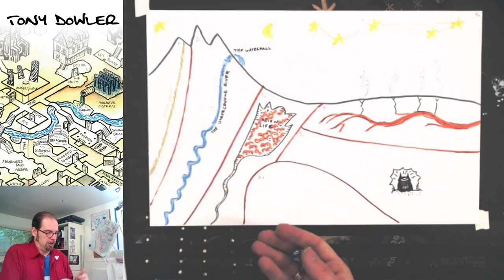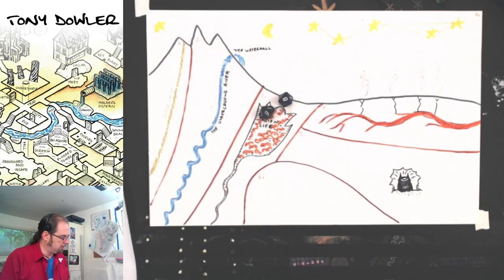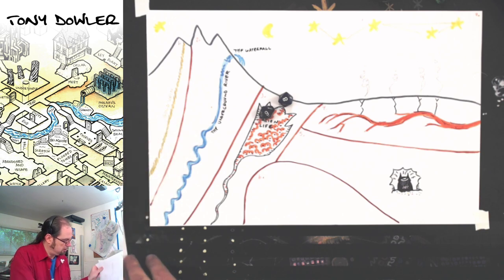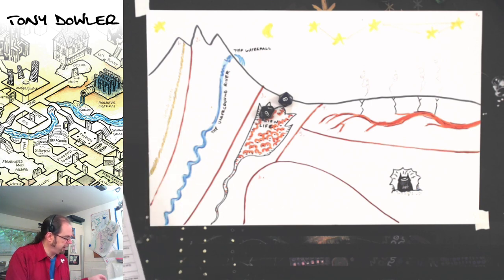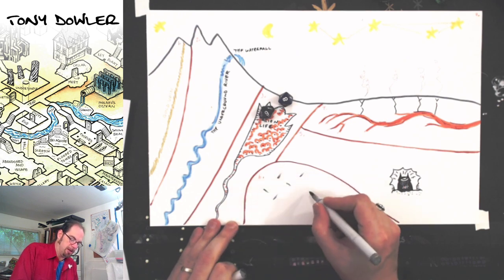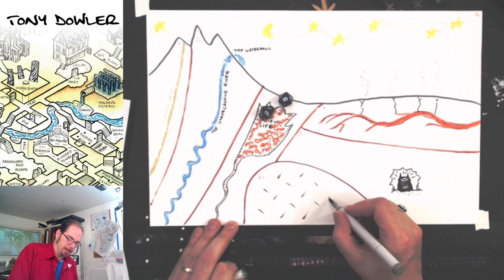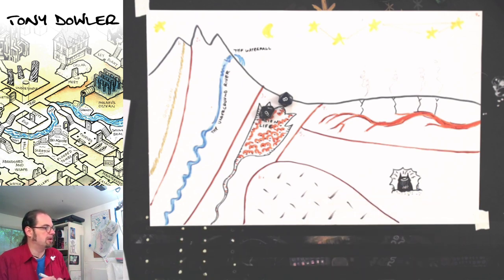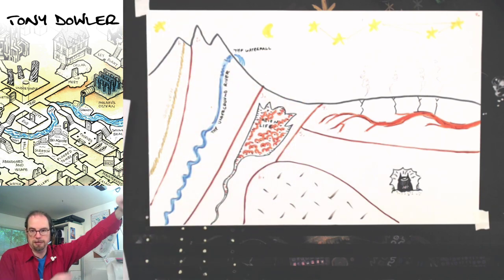Our last underground section: on a roll of eight, it's just rock. It's okay to have places in your dungeon that don't have any special features. I'm just going to stipple this in a little bit to show that it's just rock — a place for monsters to build homes in the future or something.